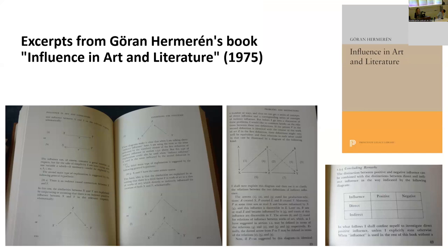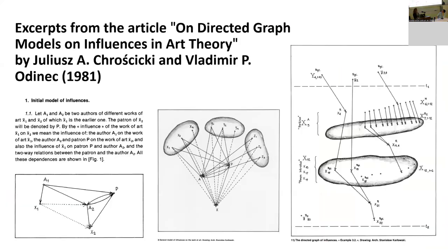A similar path was taken by art historians Julius Chroschický and Vladimir Odinec, who in 1981 designed a system to measure the diverse paths of influence connecting different art objects. Although their method was elaborate and detailed, the resulting visualizations had, one would say, marginal explanatory value. In all these cases, there were attempts to capture artistic links by measurable and therefore quantitative methods. The only problem was that applying them to the vague concept of influence presented what one might call an insurmountable challenge — or rather an obstacle.